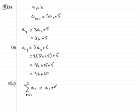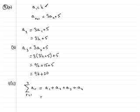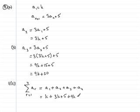Sigma means to sum, so that's plus. Then R equals 2, so that would be A2. We repeat this for R equaling 3, all the way up to 4, so that's plus the fourth term in the sequence. Now we've got the results: A1, the first term, was k, so that's k, plus A2 which was 3k plus 5, so that's 3k plus 5.